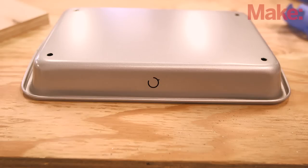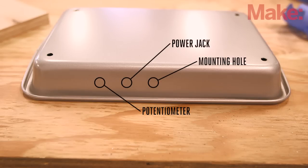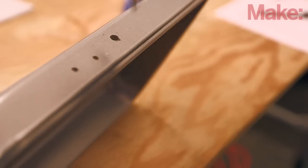We'll need three more holes in the bottom edge of the baking tin: a quarter inch hole at the center for our mounting hardware, and then two more just to the left of this hole for the power jack and potentiometer knob. Mark and drill these.